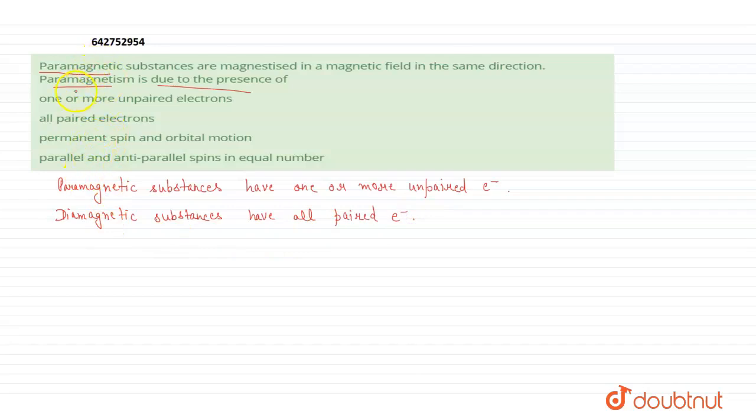So here in this question, we have to tell paramagnetism is due to the presence of one or more unpaired electrons. So option A here is the correct answer. Thank you.